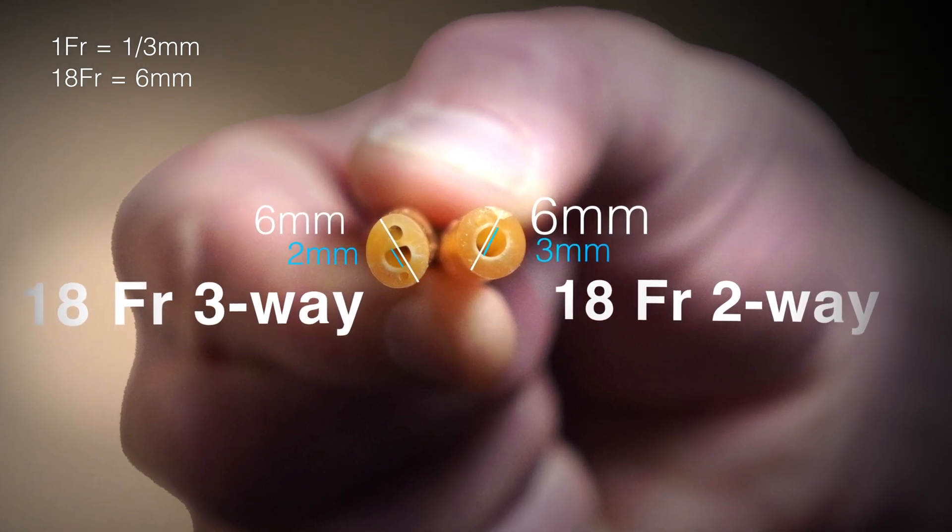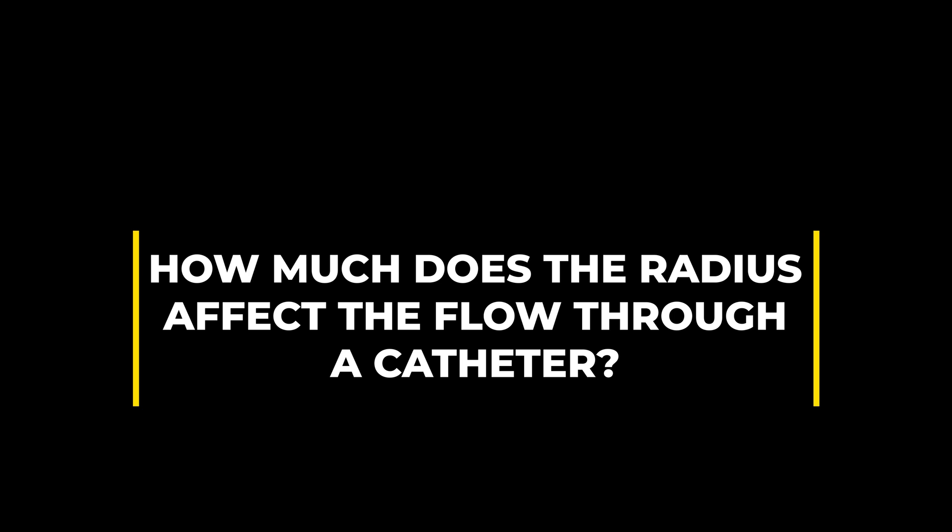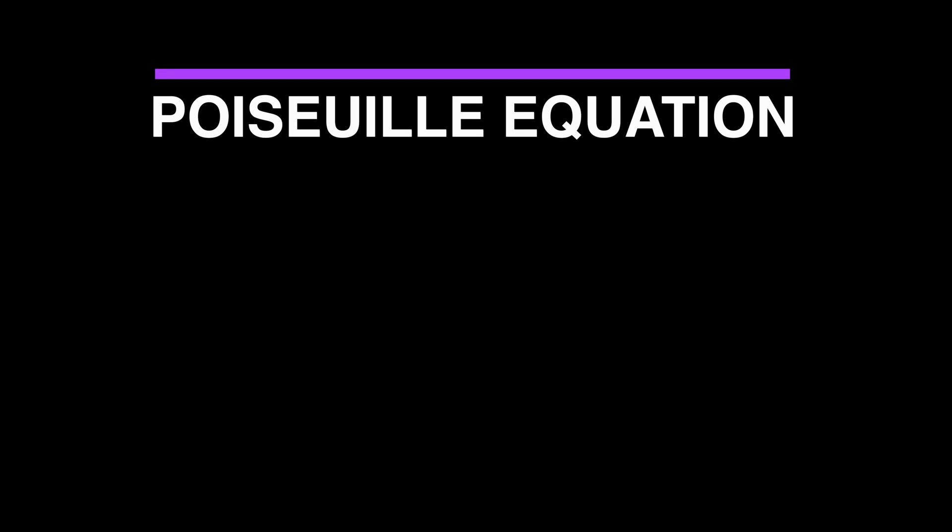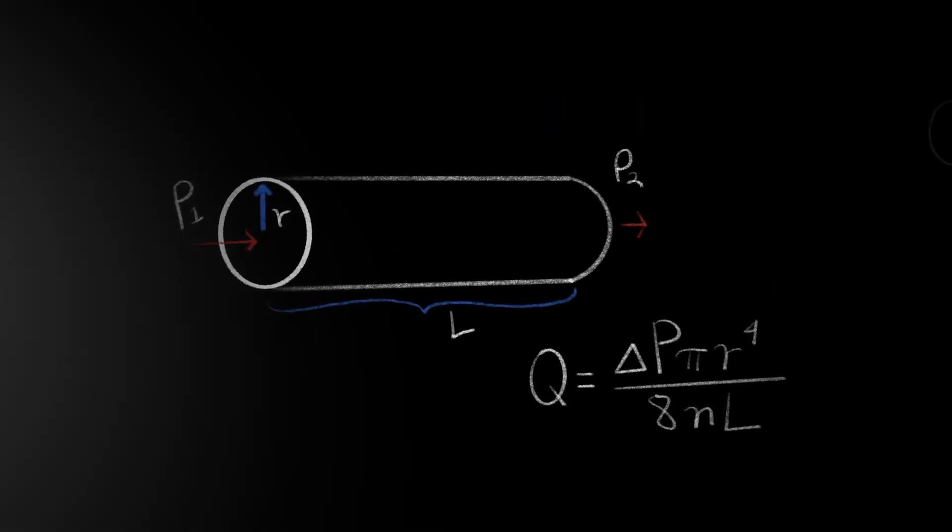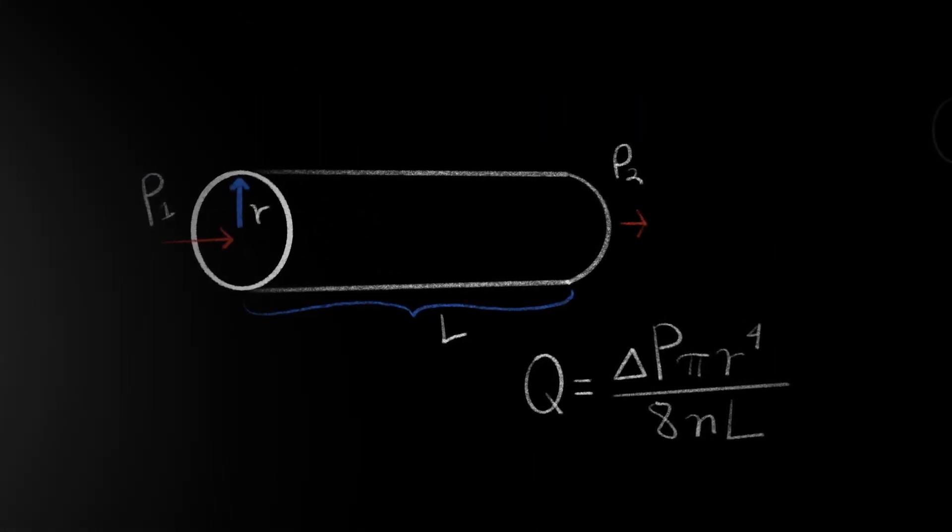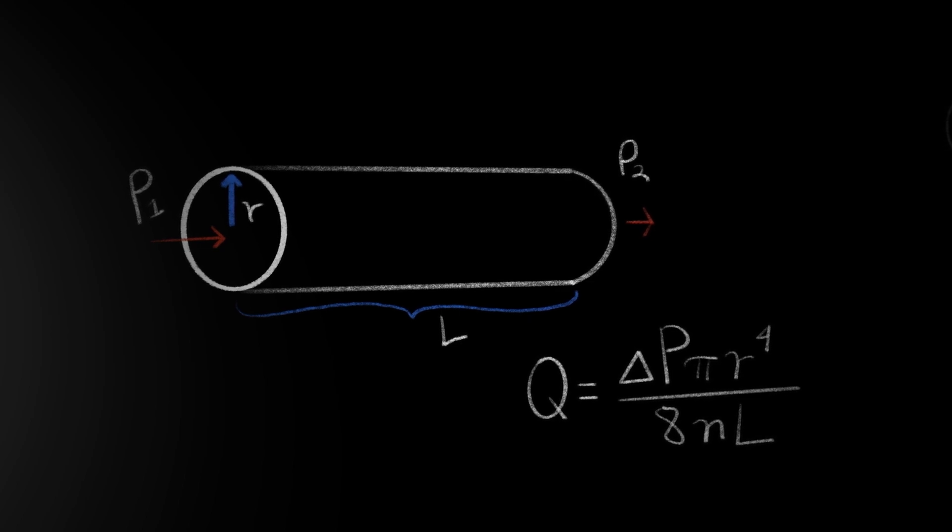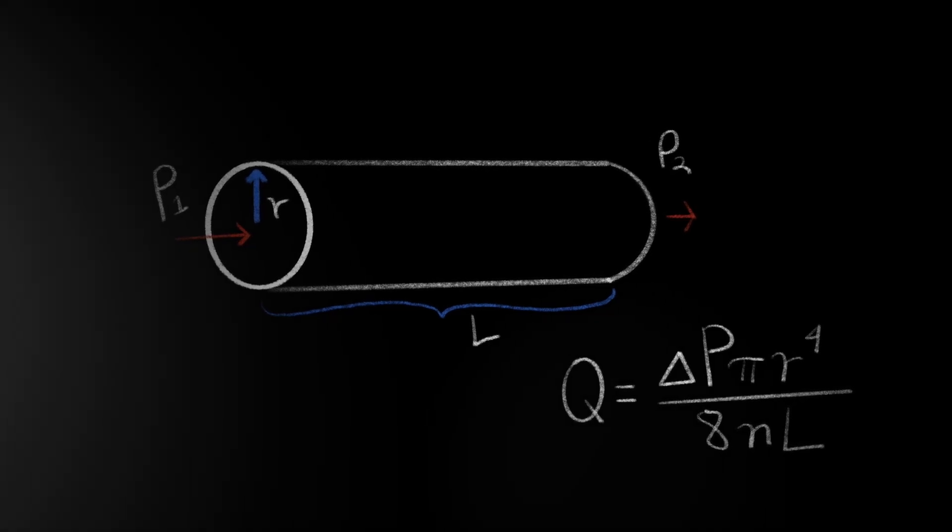So how much does the size of the catheter actually decrease the flow? We have to look at the physics of flow through a catheter and this is explained by the Poiseuille equation. In a tube of the same width and with laminar flow, liquid flows through the tube at a rate equal to the change in pressure from start to finish times pi times the radius to the fourth power over 8 times the viscosity of the liquid times the length of the tube.